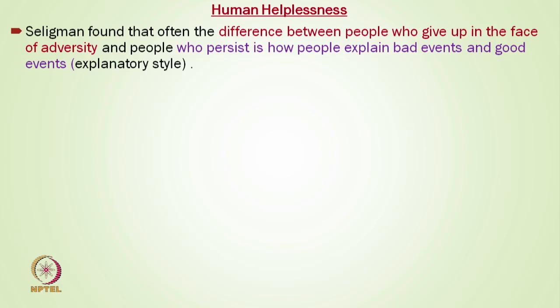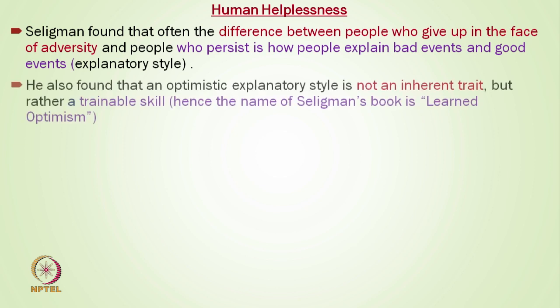Response-outcome independence was represented cognitively by the dogs as an expectation of future helplessness, generalized to new situations to produce motivational, cognitive, and emotional deficits. Human helplessness is a little different because we have higher cognitive processes. Seligman found that the difference between people who give up in adversity and people who persist is often how people explain bad and good events — people differ on explanatory style. He also found that an optimistic explanatory style is not an inherent trend but rather a trainable skill, hence the name of his book: Learned Optimism.